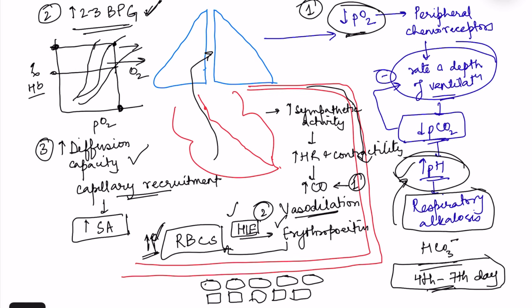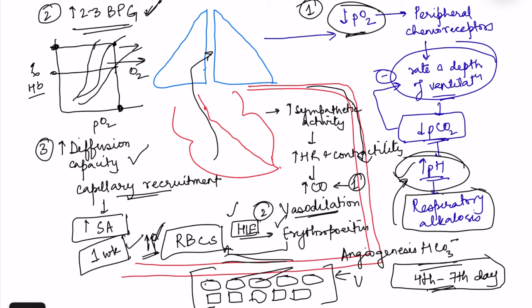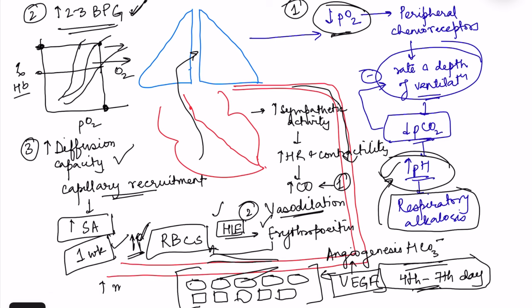Finally, there are changes at the tissue level — tissues are better able to utilize whatever oxygen is delivered, though these changes take much more time. The increase in RBC production takes around one week. At the tissue level, changes include an increase in blood vessels via angiogenesis, again mediated by hypoxia-inducible factor, which causes increased production of vascular endothelial growth factor (VEGF). There is also an increase in mitochondrial enzymes for better oxygen utilization.